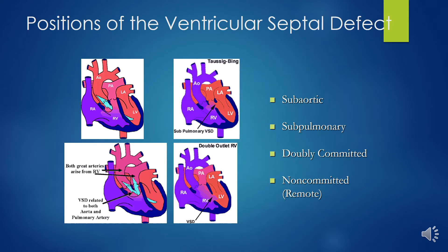In the doubly committed type, the VSD lies immediately beneath both great vessels with no intervening infundibular septum. Presentation is similar to the subaortic variant, depending on the presence of pulmonary stenosis.